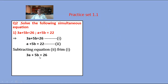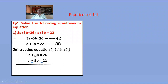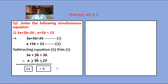Subtracting equation 2 from equation 1: 3a plus 5b equals 26, minus (a plus 5b equals 22). When one equation is subtracted from the other, the signs of every term in the subtracted equation change. So plus 5b minus 5b gets 0. Then 3a minus a equals 2a, and 26 minus 22 equals 4. Therefore 2a equals 4, and a equals 4 upon 2 equals 2.